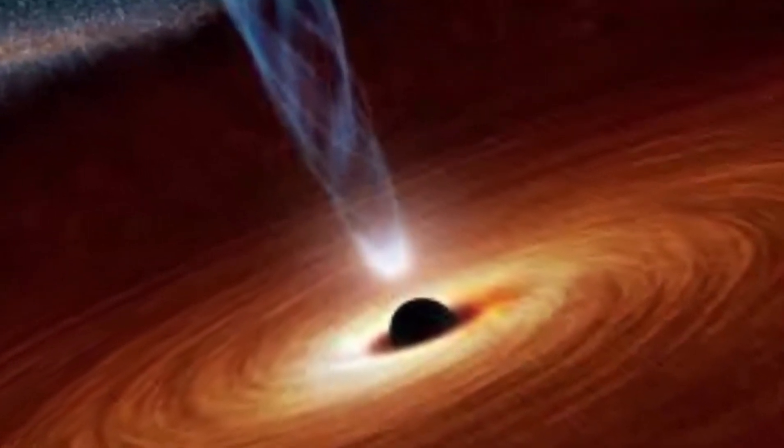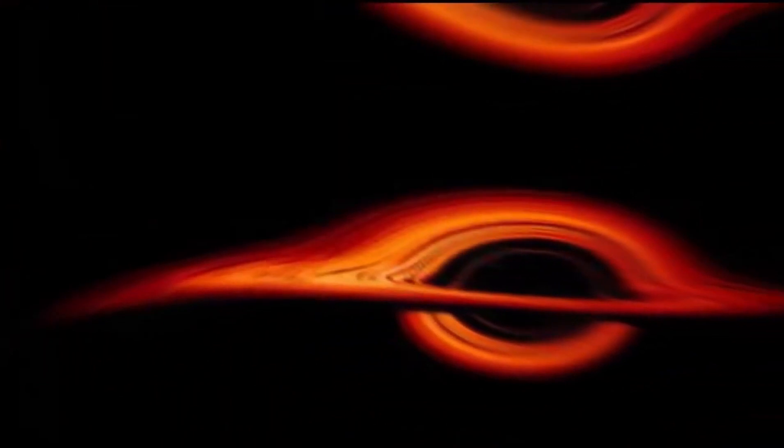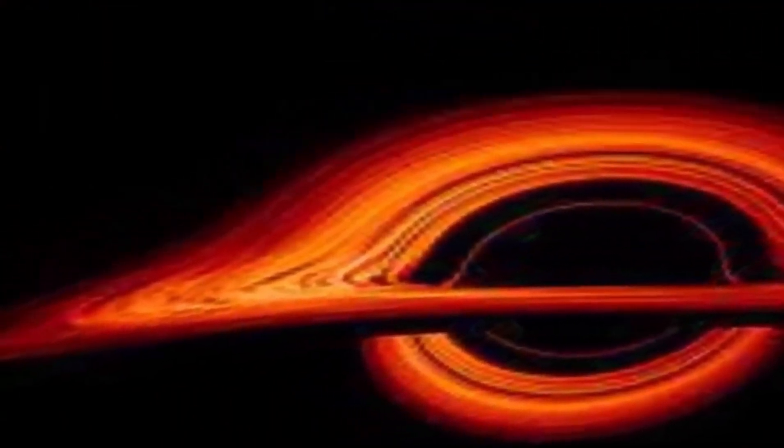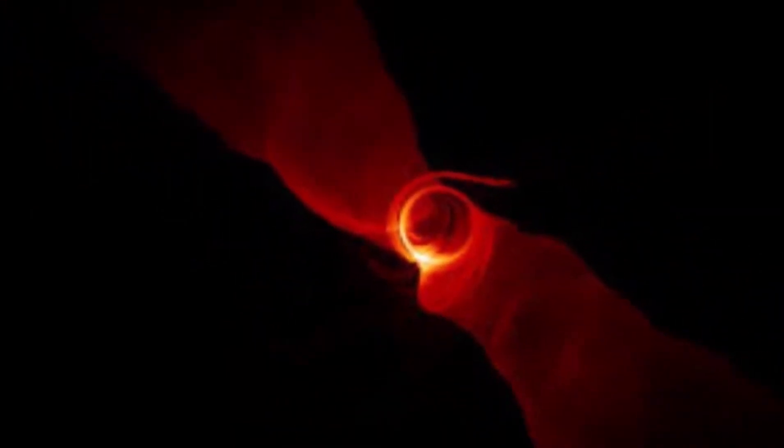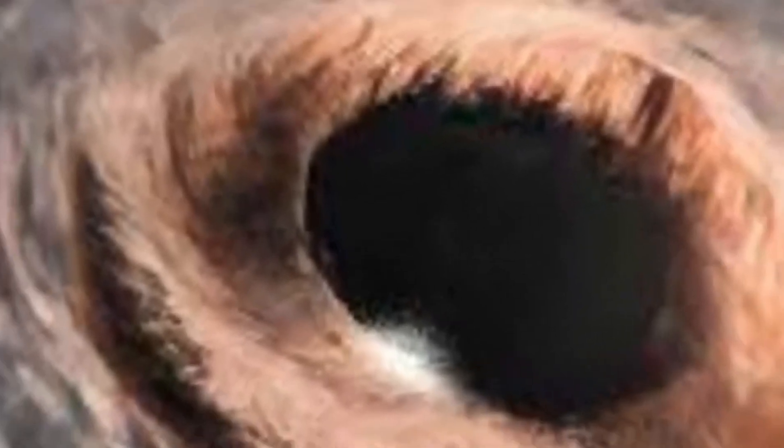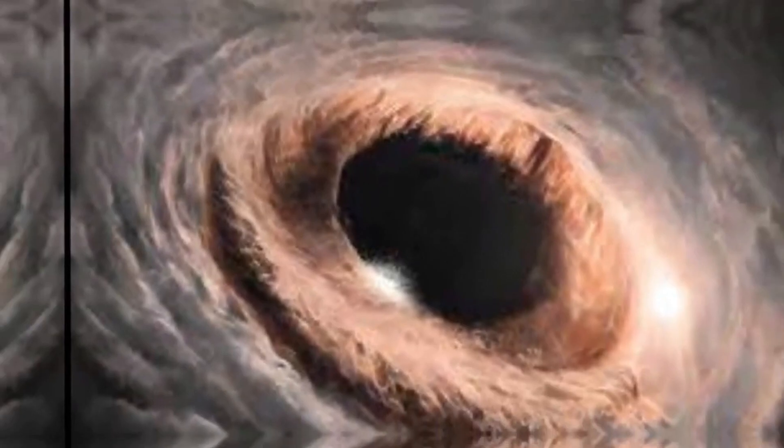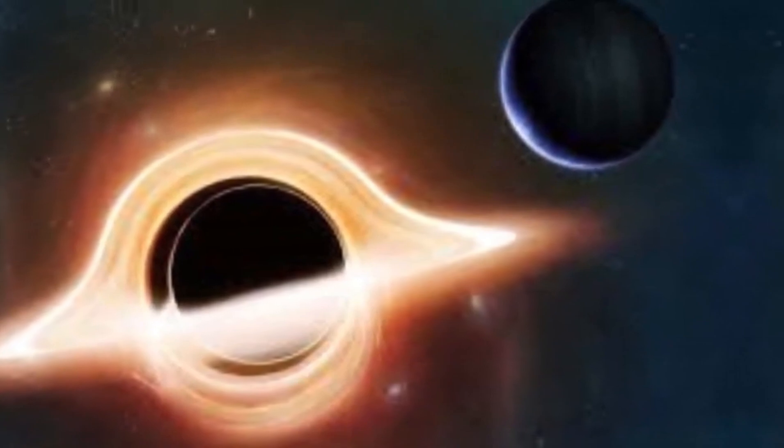Rotating black holes also have something called ergospheres, swirling zones surrounding a black hole where space-time itself is dragged along by its rotation faster than the speed of light. If you happen to be there, no matter how hard you'd try to remain stationary, it would be to no avail. In a way, these ergospheres are like whirlpools in space-time, influencing the movement of nearby objects, which come in contact with each other, producing extremely bright light. Because of how insanely fast things move there, if an object managed to escape an ergosphere, it would leave with much more energy than it entered with.